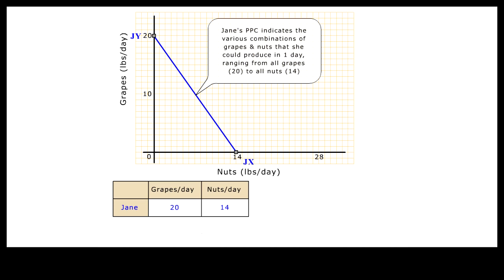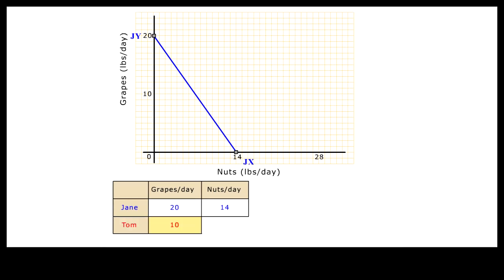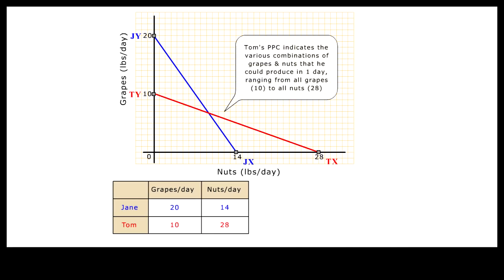This production function is commonly known as Production Possibilities Curve or Production Possibilities Frontier. The straight line production function represents various combinations of grapes and nuts that Jane could produce in one day, ranging from all grapes to all nuts. The other worker, Tom, can produce a maximum of 10 pounds of grapes per day or 28 pounds of nuts per day. We can draw Tom's linear production function similarly by linking the vertical intercept 10 to the horizontal intercept 28. The red line is Tom's PPC or PPF.